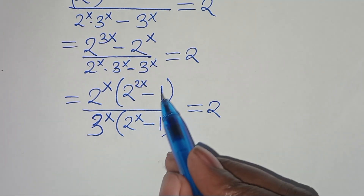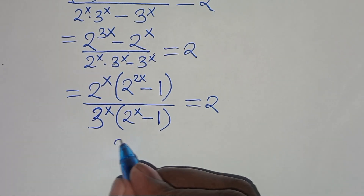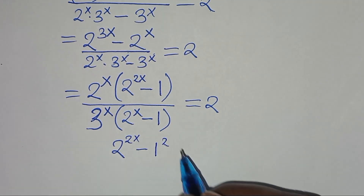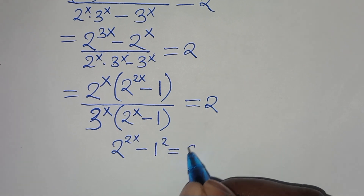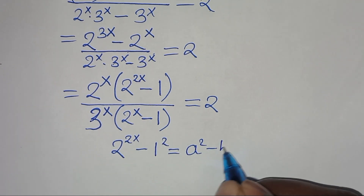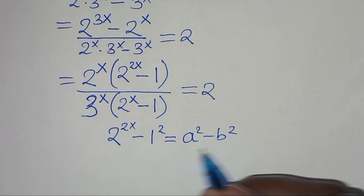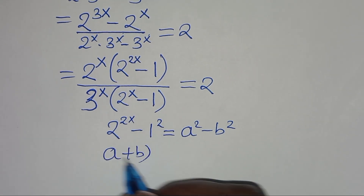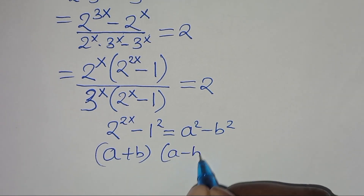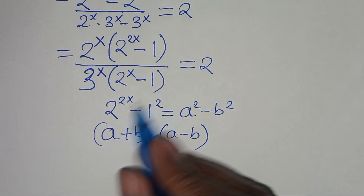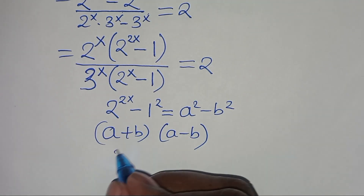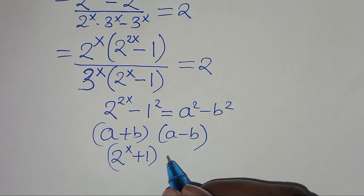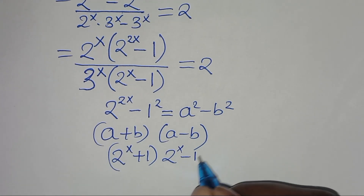Now 2^(2x) minus 1 can be expressed as (2^x)^2 minus 1^2, which is in the form a^2 minus b^2, the difference of two squares. This factors as (a plus b)(a minus b), so we get (2^x plus 1) times (2^x minus 1).